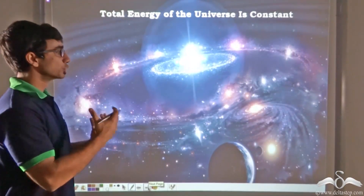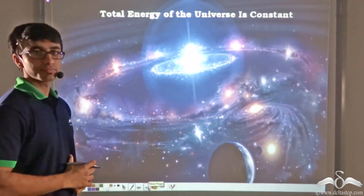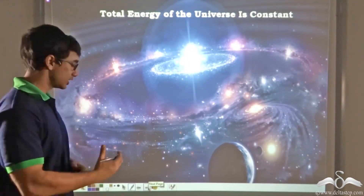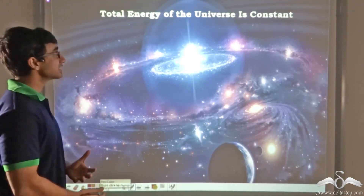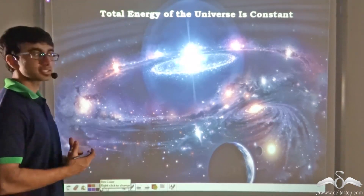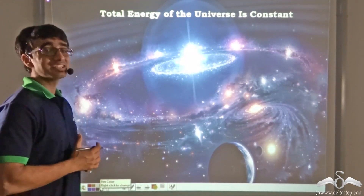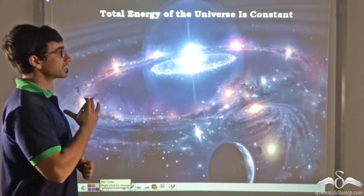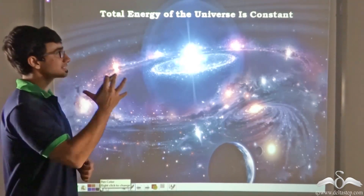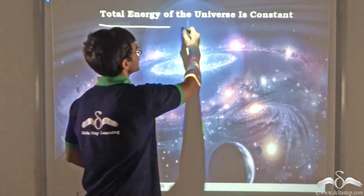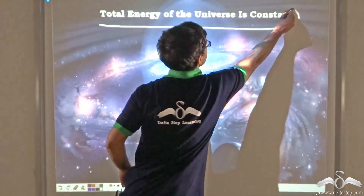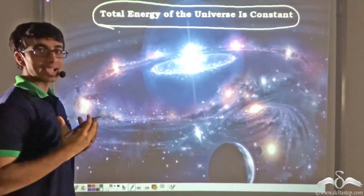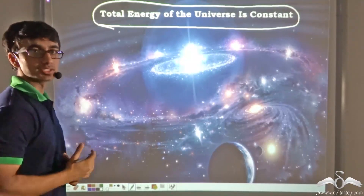Now consider the universe at large. If we keep the entire universe under observation, we can say that the universe is also a system — and a very, very large system at that. So if we consider the universe as a system, we can say that the total universal energy, or the total energy in the universe, is a constant.